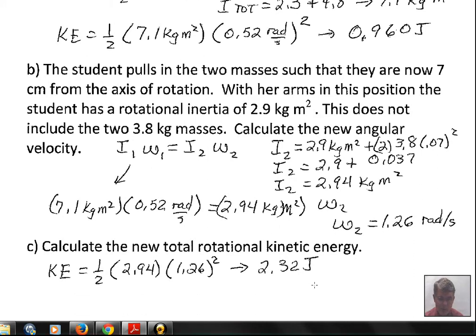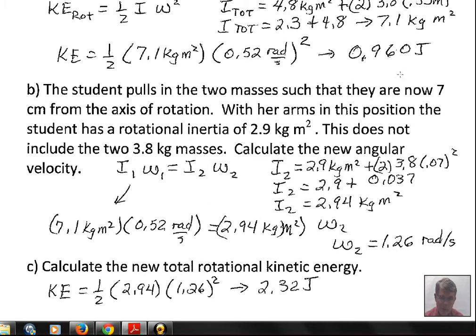Now what is the new rotational kinetic energy? We have a new I and new omega. We're still using one-half Iω², but both the I value and omega value have different values. You should double-check—2.32 joules is the new kinetic energy.